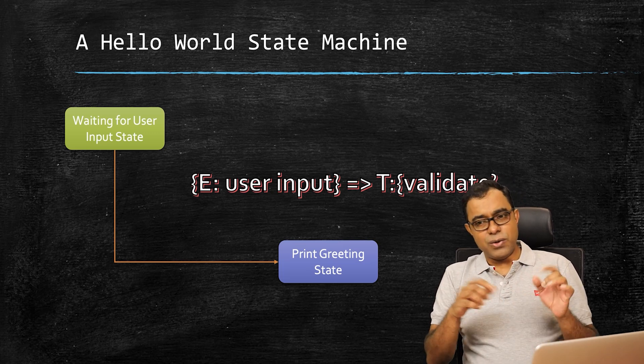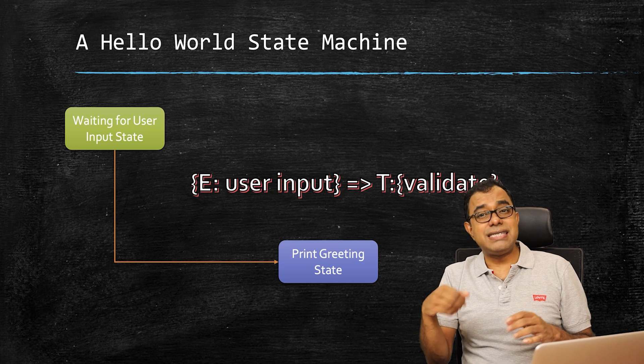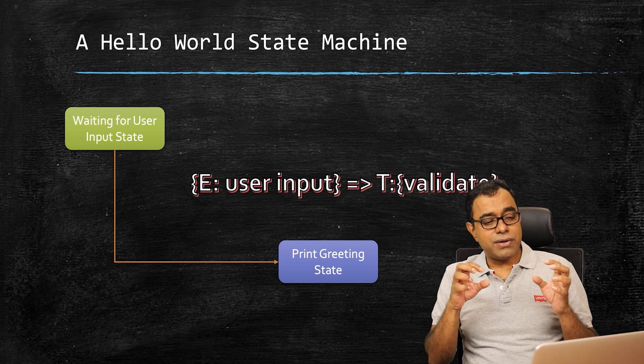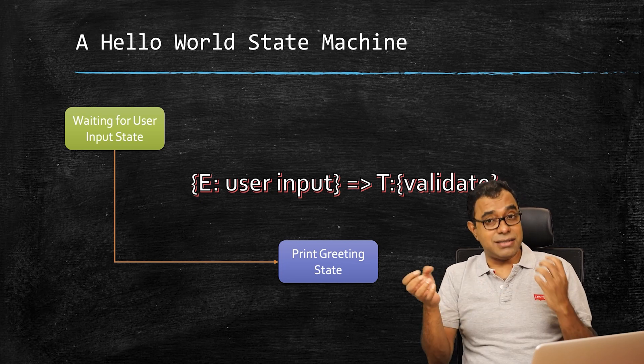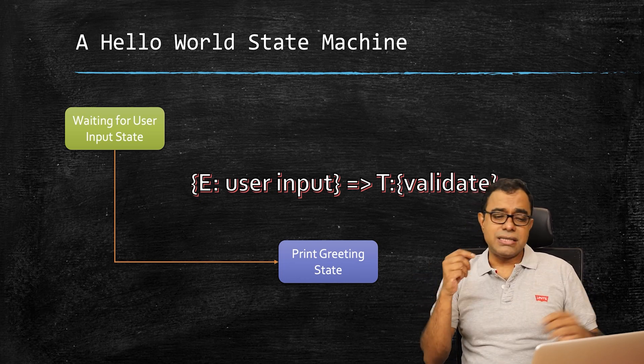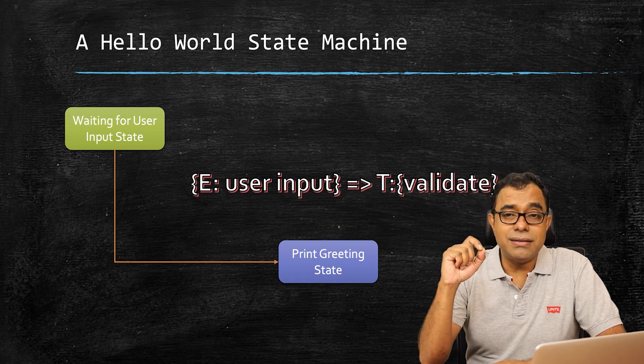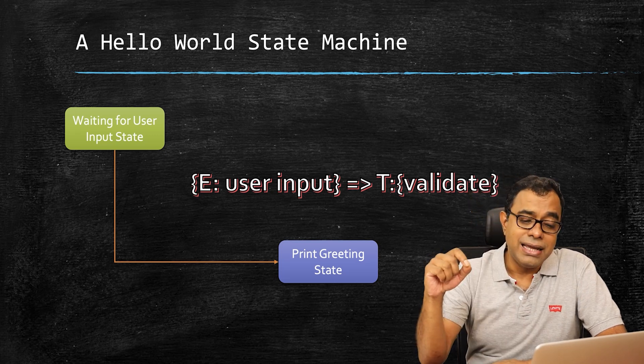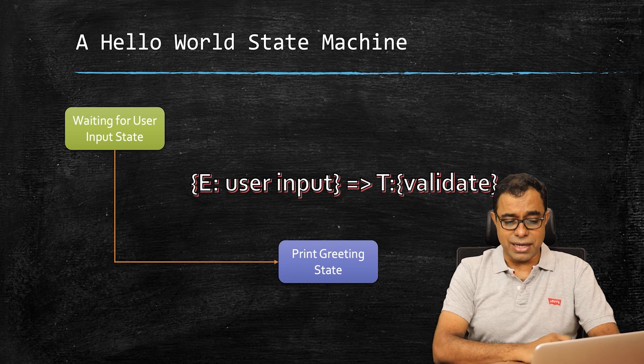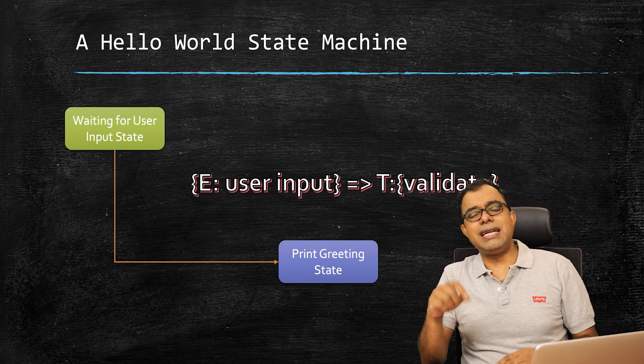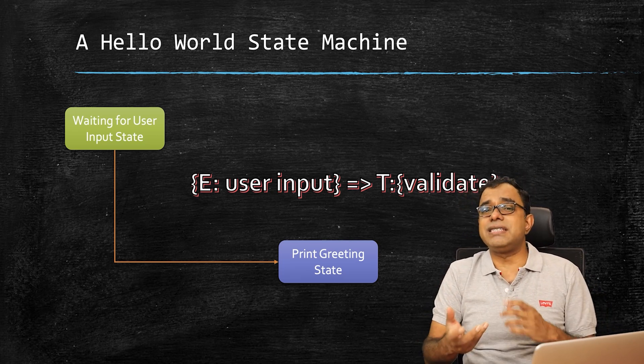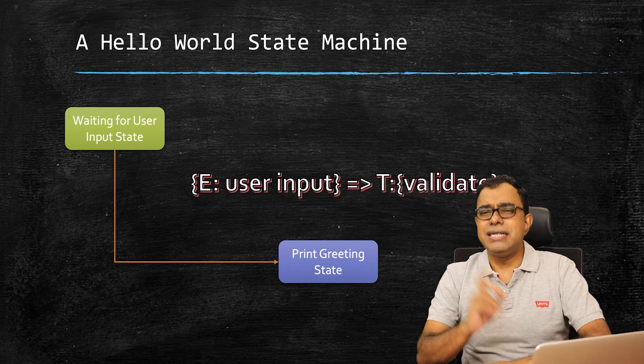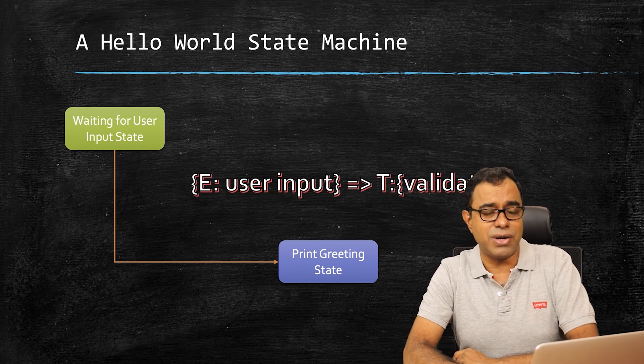So if I go and enter my name and press enter, then it's an event. It triggers the event that something has happened, and waiting for user input state receives that event. As a transition function, it validates that the name is a name, it's alphabetic characters, not one to nine. And then it goes to print greeting state. In print greeting state, as soon as printing ends, that itself is an event to again go back to waiting for user input state. Think about it. It's very interesting to think about this in this particular way.